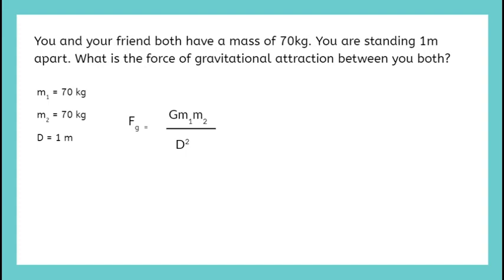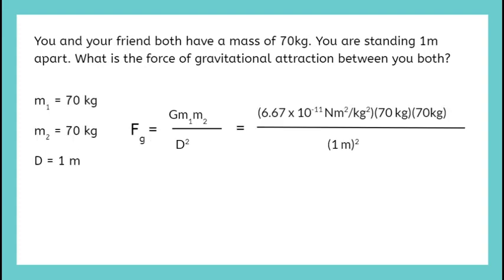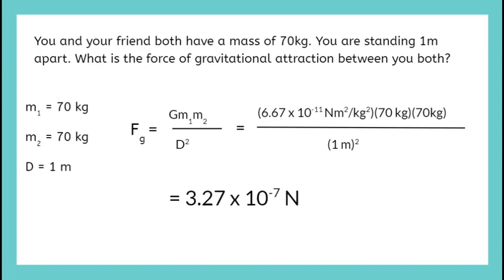Now we can write out our equation. So the gravitational force between you is equal to big G multiplied by your mass multiplied by your friend's mass divided by the distance squared. Let's plug in our variables. If we plug in your masses and the distance and we do the calculation, you can definitely use a calculator.